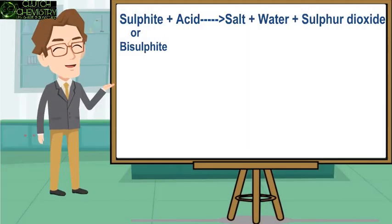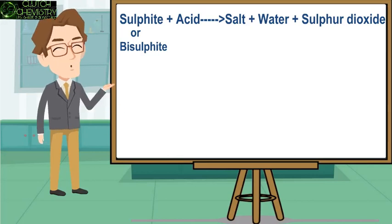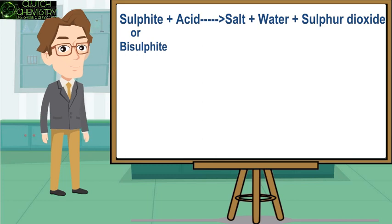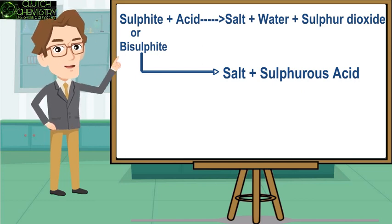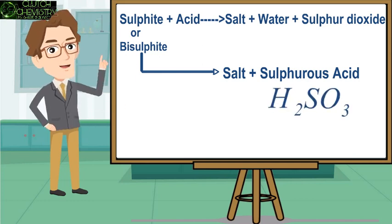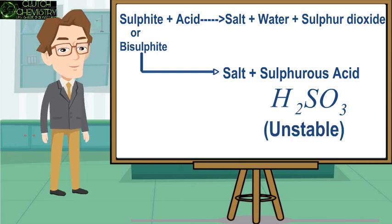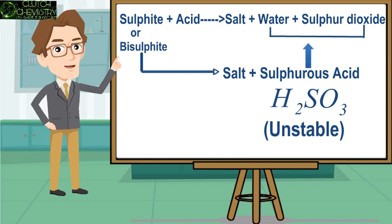In general, Sodium Sulphite and Sodium Bisulphite react with acid to form salt plus water plus sulfur dioxide. More precisely, sulphites and bisulphites react with acid to form salt plus sulfurous acid. The sulfurous acid formula is H2SO3. Sulfurous acid is unstable, so it dissociates into water plus sulfur dioxide.